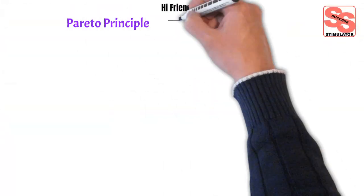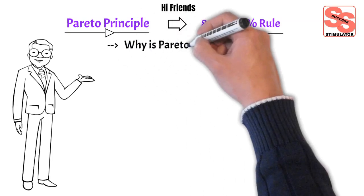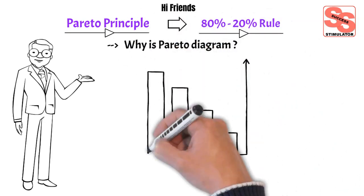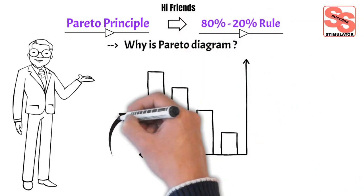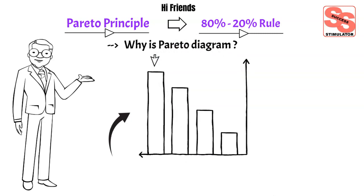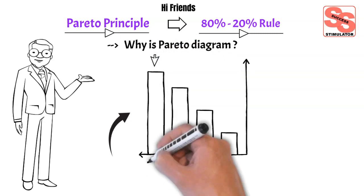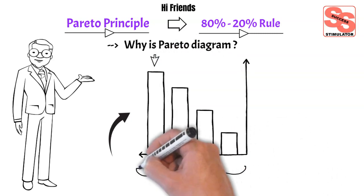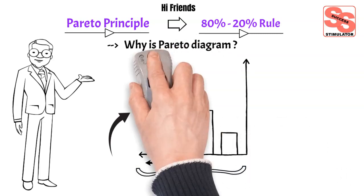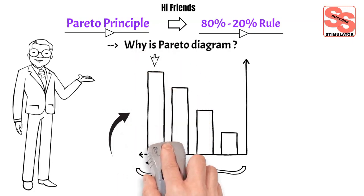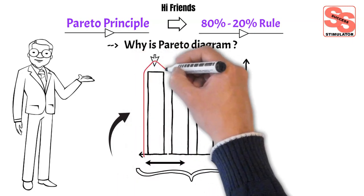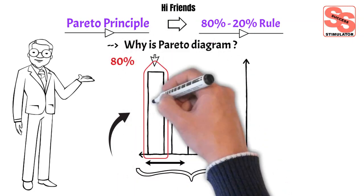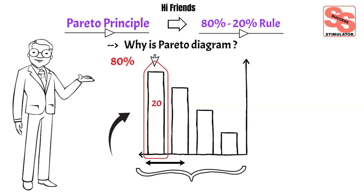What is a Pareto diagram? It is a bar chart arranged in descending order of height. Bars on the left are relatively more important than those on the right. It separates the vital few from the trivial many. 80% of trouble comes from 20% of the problems. It is named after Italian economist Vilfredo Pareto.